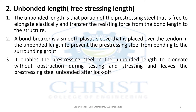The second part is the unbounded length, also called the free-stressing length. The unbounded length is that portion of the pre-stressing steel that is free to elongate elastically and transfer the resisting force from the bond length to the structure. In the unbounded length, a bond breaker is provided in the form of a plastic sleeve that prevents the pre-stressing steel from bonding to the surrounding grout.